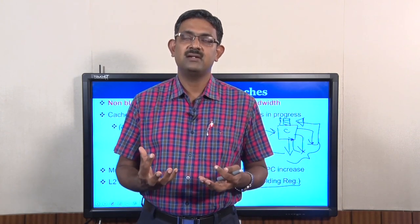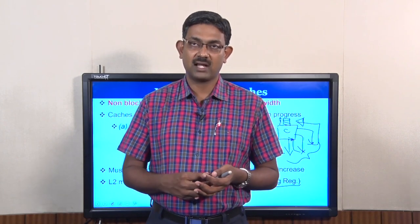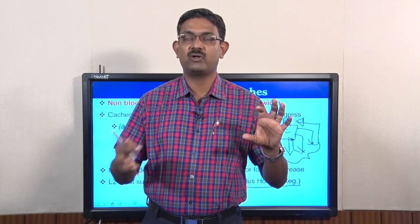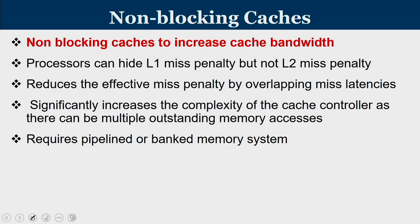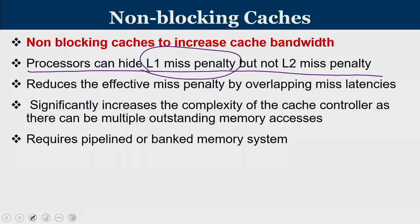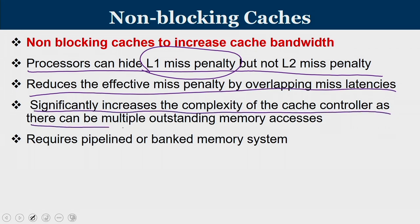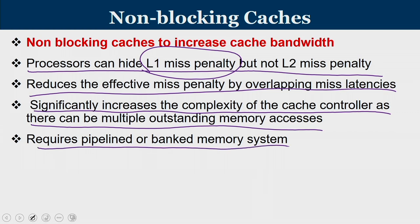If the MSHR size is 8, the cache controller can support 8 outstanding misses at a time. Once the MSHR is full, the processor stalls until one of the 8 outstanding misses returns. MSHR is a very important control storage unit helping the processor with out-of-order execution. Non-blocking caches allow processors to hide L1 miss penalty — processors can still run with multiple L1 misses being processed in parallel. It reduces effective miss penalty by overlapping miss latency, but significantly increases cache controller complexity. It requires a pipelined or banked memory system to support it.